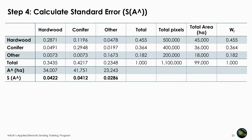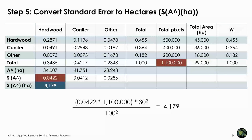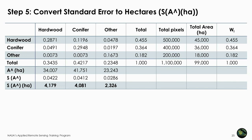Once you calculate the standard error for the area estimates, you put them in the cells for each class. To be most useful, the standard error should be converted to hectares by multiplying the standard error by the total number of pixels, multiplying by 30 squared, and dividing by 100 squared. For hardwood, the standard error is 4,179 hectares.